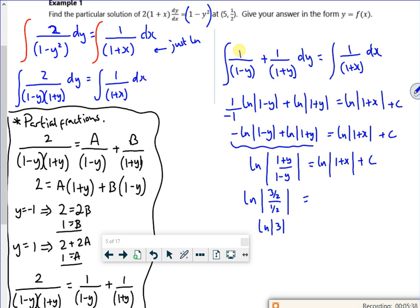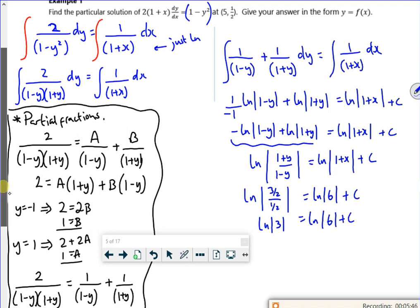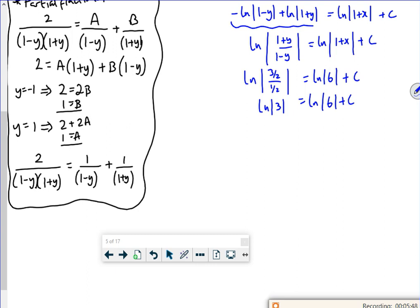If I take it over, so I've got log 3 minus log 6. I can combine them. That will give me log 3 over 6, which is log a half. So yep, I'll see that like that for now. It's getting carried away with my little self. So that's my C value.